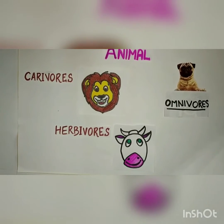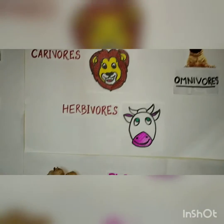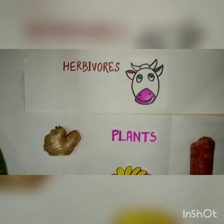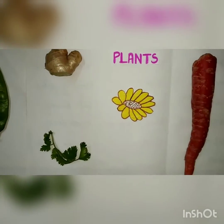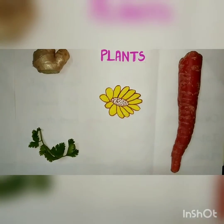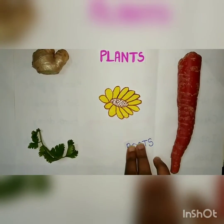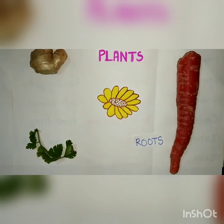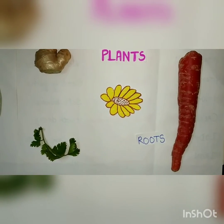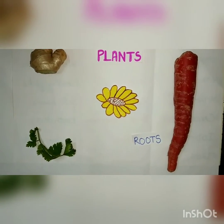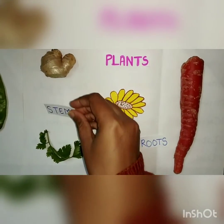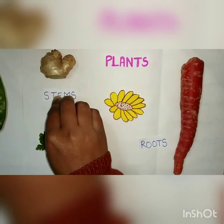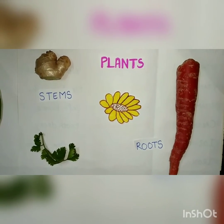Now let us understand about the different plant sources. From plants we have roots, which are edible, like carrot etc. Then we have stems like potato, ginger etc.